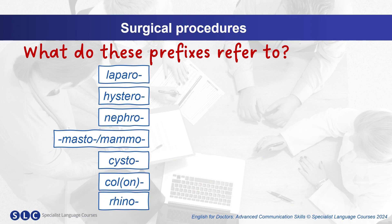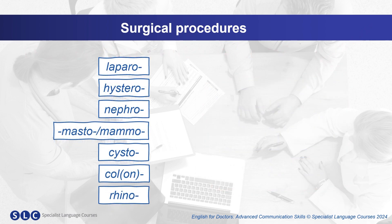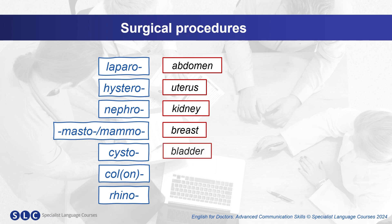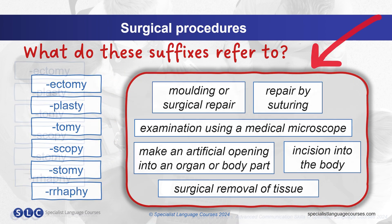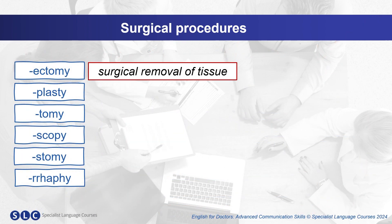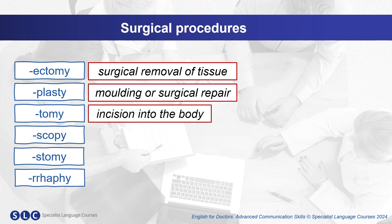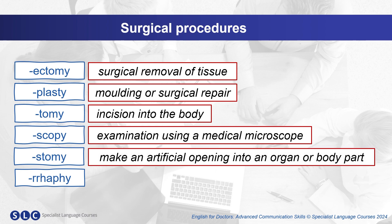Do you know what these prefixes refer to? Here's a clue. And here are the answers. And what about these suffixes? Here's some help. And here are the answers: Ectomy — surgical removal of tissue. Plasty — moulding or surgical repair. Tomy — incision into the body. Scopy — examination using a medical microscope. Stomy — making an artificial opening into an organ or body part. And rraphy — repair by suturing.